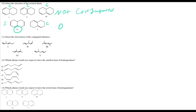Question 11: select the conjugated dienes. Conjugated means double bond, one-carbon gap, double bond. Options with too many gaps are bad. Option C has double bond, gap, double bond — conjugated. Option D also has double bond, gap, double bond — conjugated. Options A and B have too many gaps. So C and D are the correct answer choices.